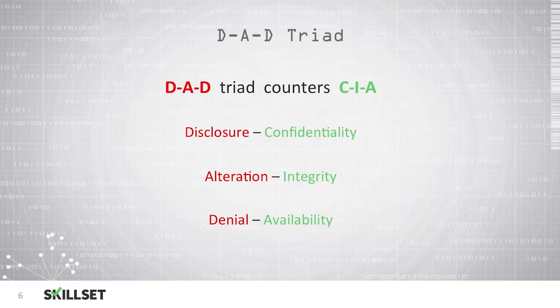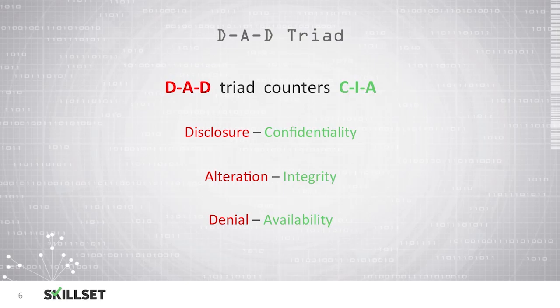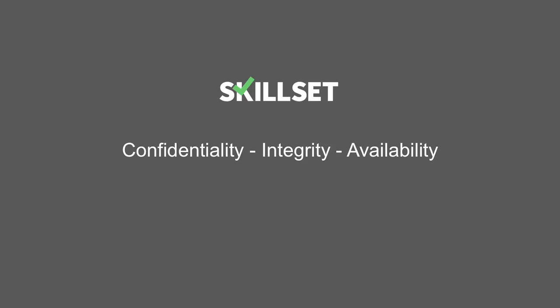Disclosure is a breach of confidentiality — if we disclose data to an unauthorized individual, we have failed to maintain confidentiality. Alteration is the unauthorized modification of our data — when an attacker modifies our data without permission, we have lost integrity. Finally, Denial — if an attacker is able to deny access to our system, they have breached our availability. This concludes our Confidentiality, Integrity, and Availability module.